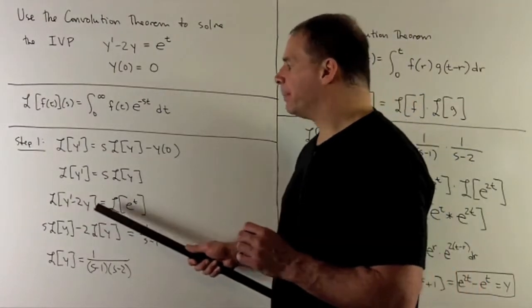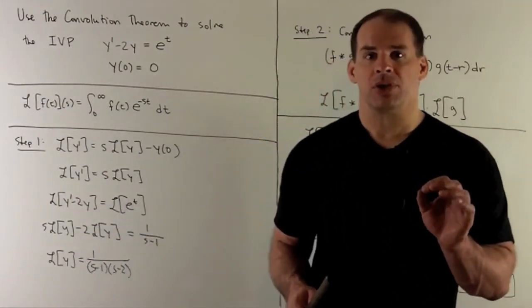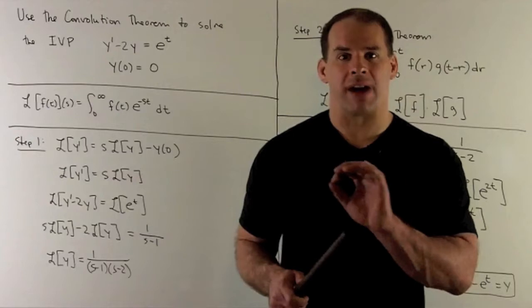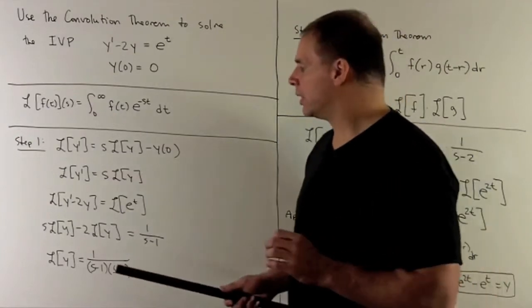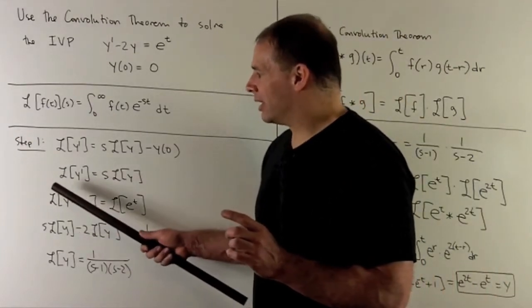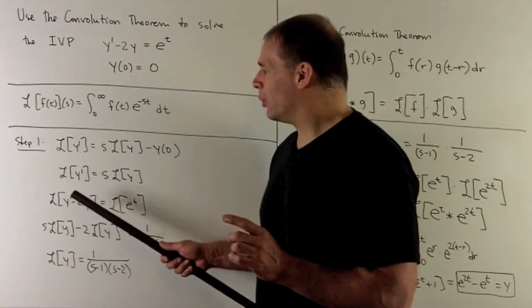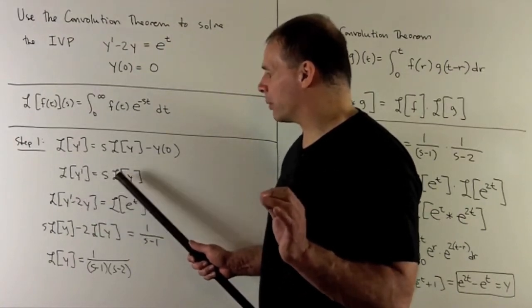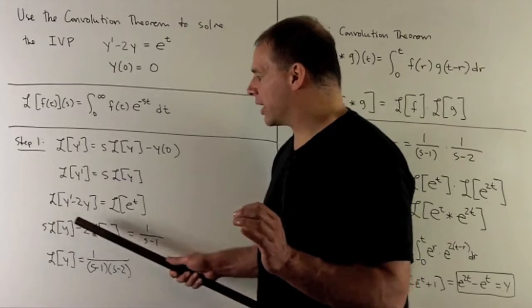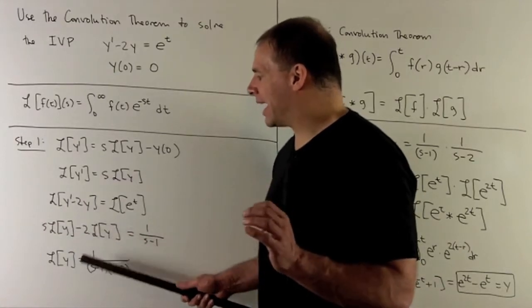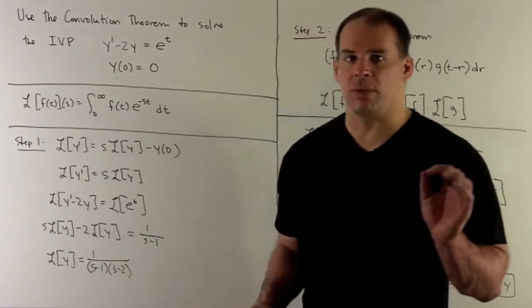On the other side, I can apply linearity. So that says I can break up the sum, factor out any numbers. When we replace Laplace transform of y prime with s times Laplace transform of y, we can factor out s minus 2. And then, I can isolate Laplace transform of y.